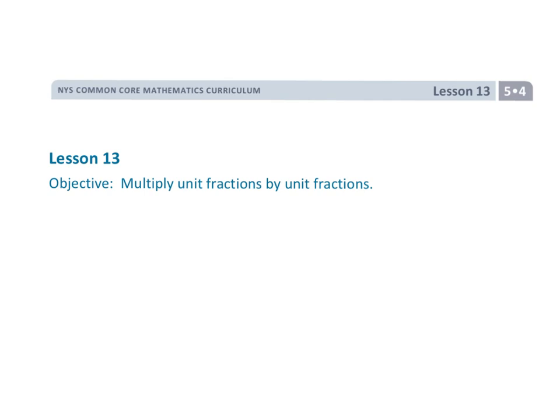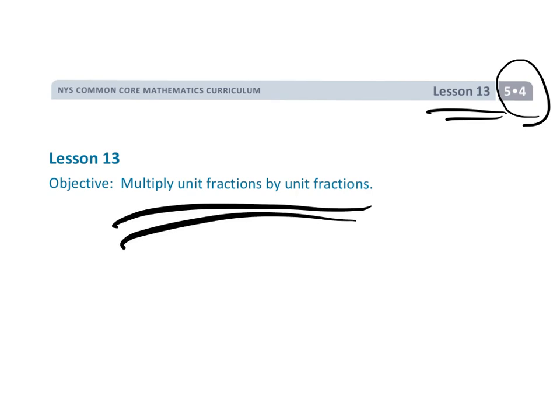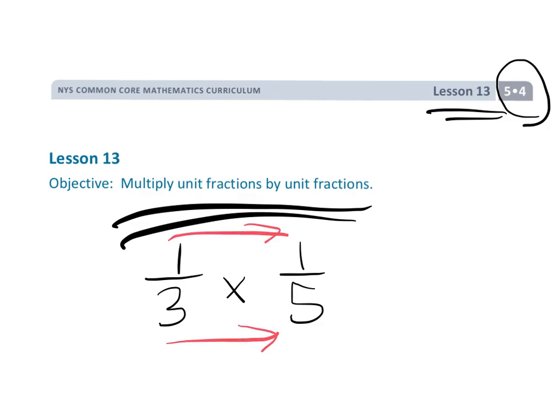This is fifth grade module 4 lesson 13. In this lesson we're going to learn how to multiply unit fractions by unit fractions — stuff like 1/3 times 1/5. We're going to do more than just explain the rule that you multiply straight across. For kids, they want to know why that rule makes sense, so we're going to explain why it's not just an arbitrary rule but builds number sense.